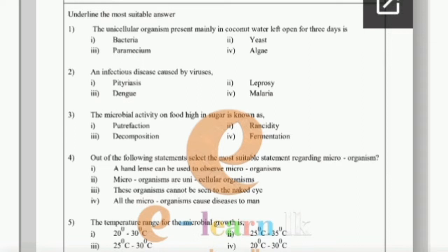Let's move to the first one: the unicellular organisms present mainly in coconut water left open for three days. We know there are five main types of microorganisms: virus, protista or protozoa, fungi, algae, and bacteria. Bacteria, fungi, and algae give support to humans and other organisms, but virus never gives support to animals and other organisms — that's why most people consider virus the most dangerous microorganism.